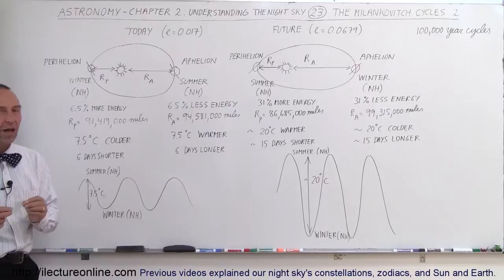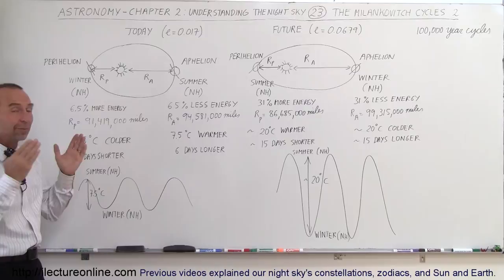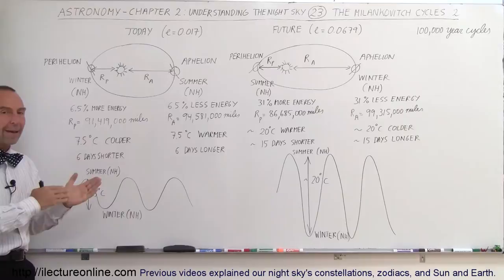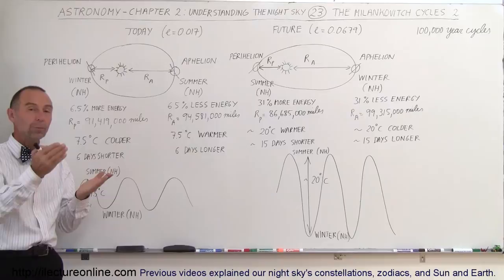Welcome to Lecture Online. Now let's talk about the effect of the Milankovitch cycles on Earth's climate. Remember, the Milankovitch cycles are 100,000-year cycles where Earth's ellipticity changes. It goes from a near-circular orbit to a much more elliptical orbit and back every 100,000 years or so.